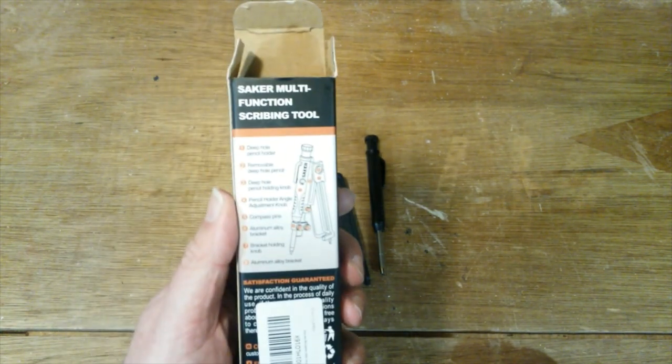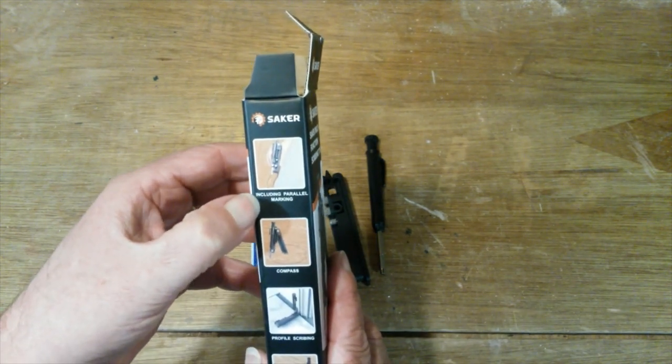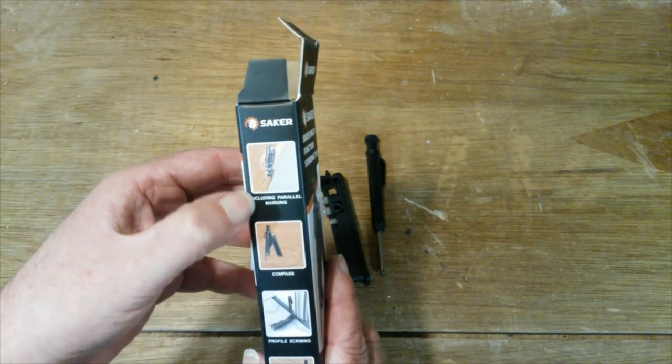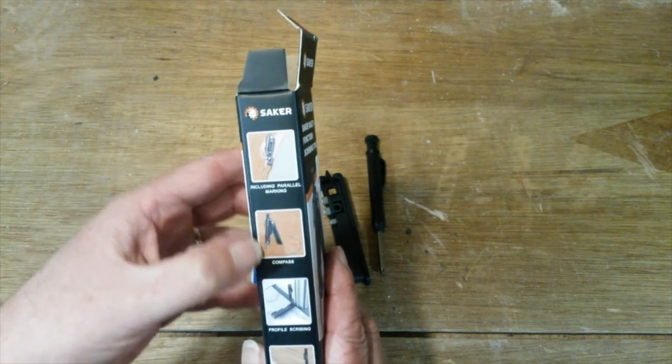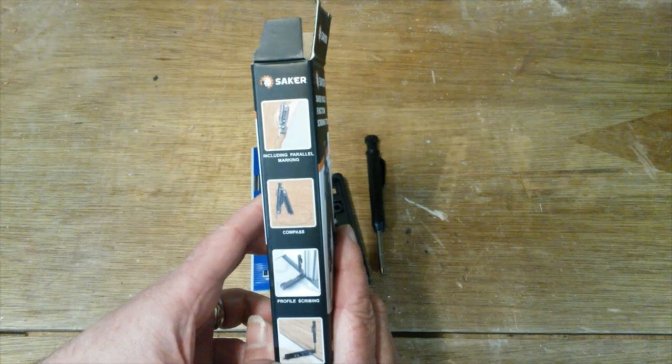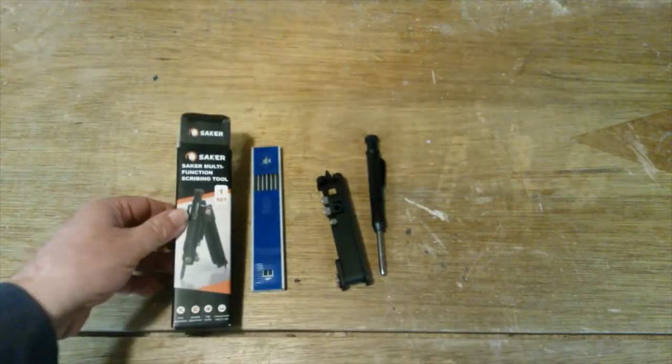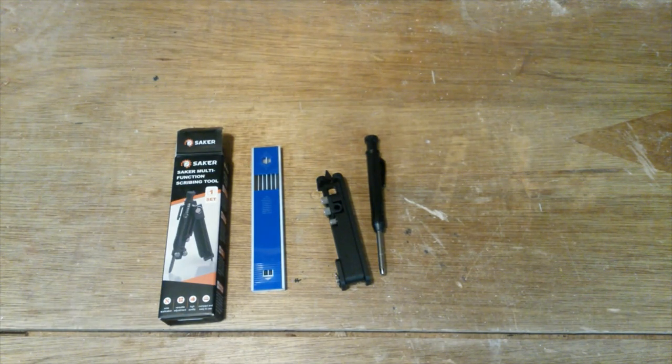There's a diagram on the back of the box. On the side of the box are four little pictures including parallel marking, compass, profile scribing, and edge rule. I'll have a look at the instructions and put it together.